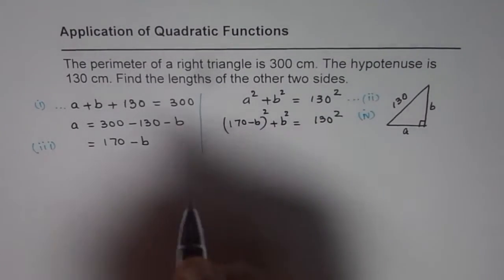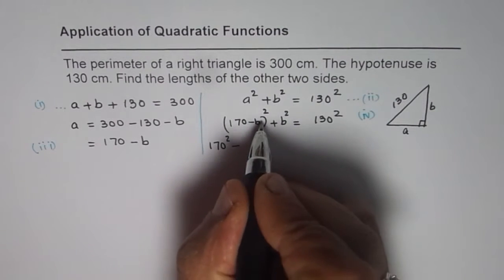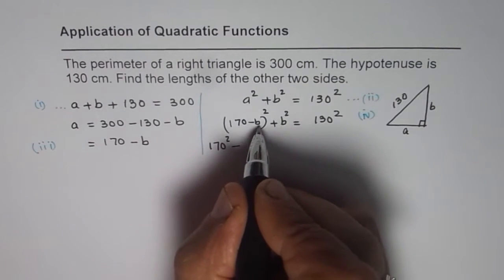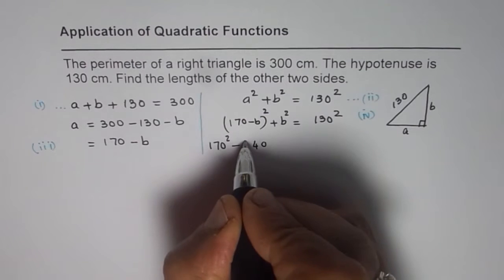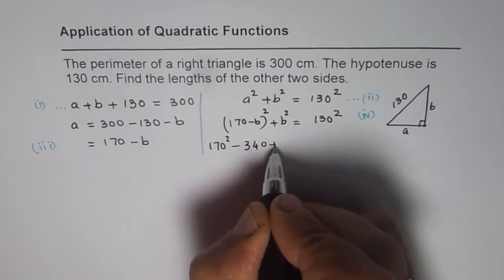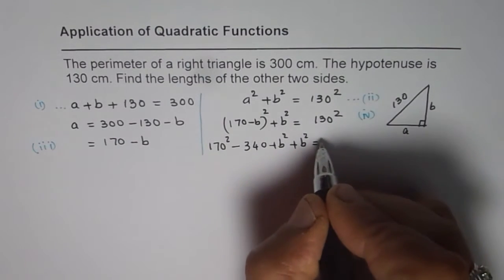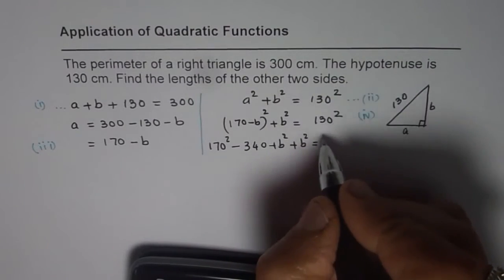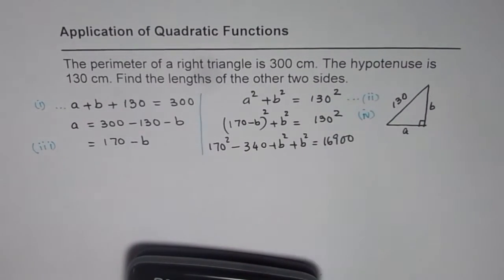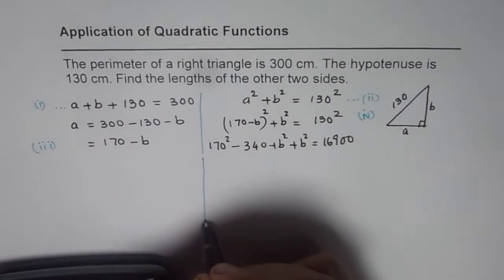Let us expand this. We get 170 squared minus 2 times 170 times B — that is 340B — plus B squared plus B squared equals 130 squared.